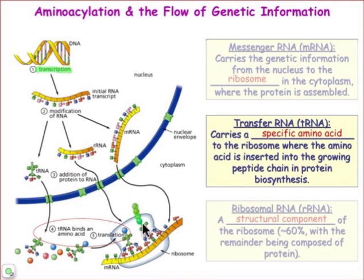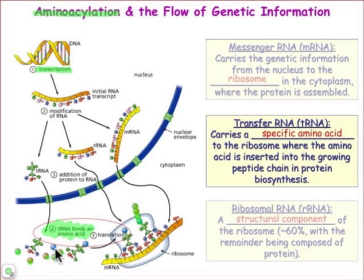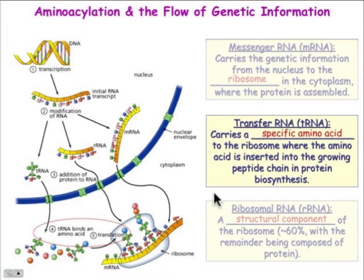In this webcast, we want to take a look at just one process in this overall transformation of information from DNA to protein, and that's the process in step 4 here, which is known as aminoacylation. Aminoacylation is placing a specific amino acid onto the corresponding transfer RNA. It's important that exactly the correct amino acid be placed on the tRNA that codes for that amino acid in the messenger RNA sequence, because a misaminoacylation would result in a protein that has a mutation, which ultimately could lead to disease.